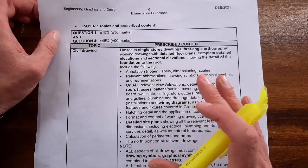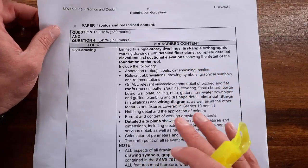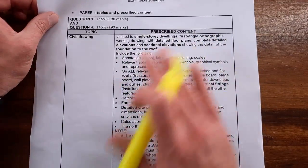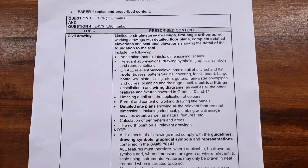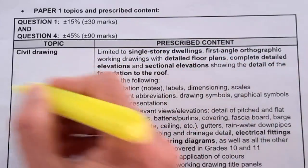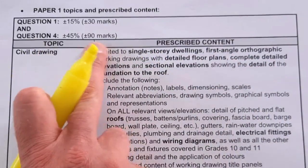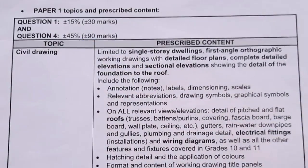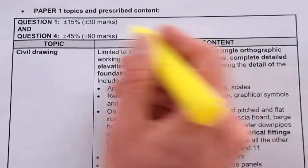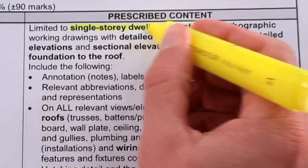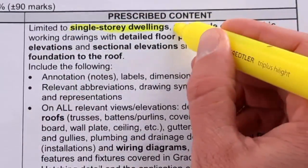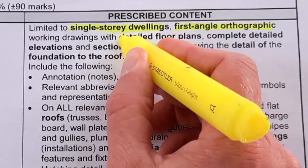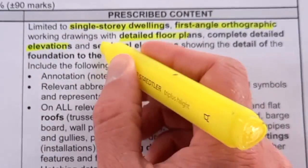I'll be showing you the memos like you've never seen it before, a deep dive into what exact marks learners keep losing because they do not know what teachers look at when marking. Let's look at an overview. You're going to be limited in your civil drawing question four, 90 marks, to single story building, first angle orthographic projection.